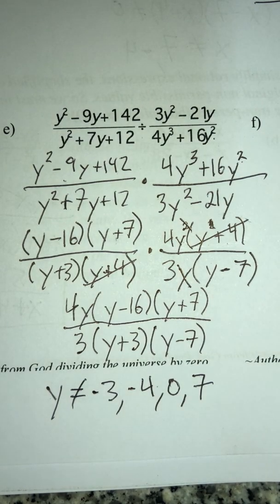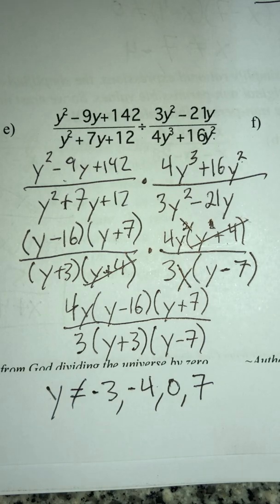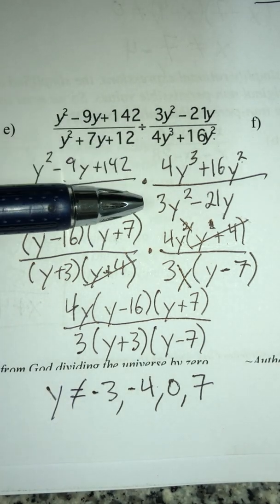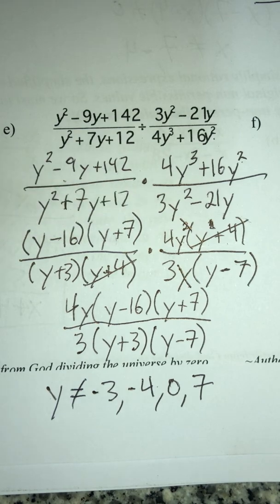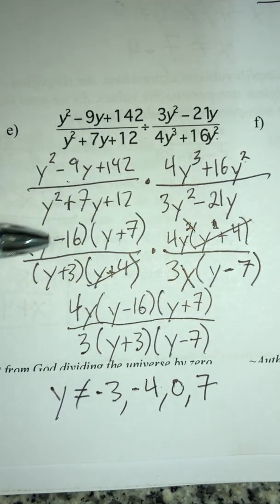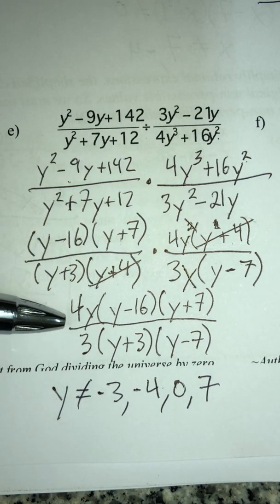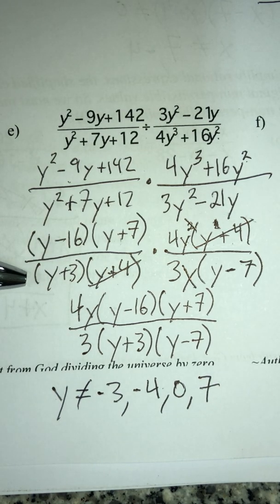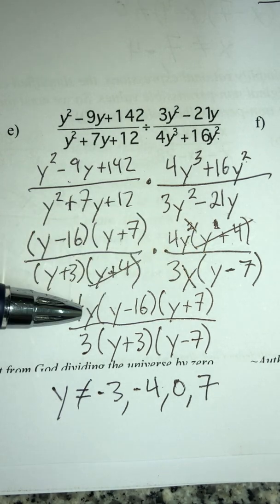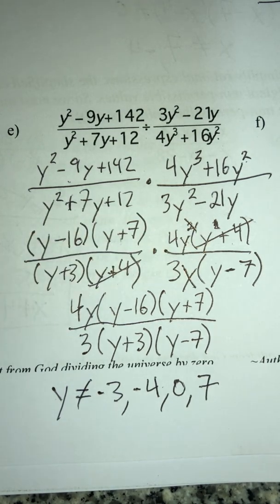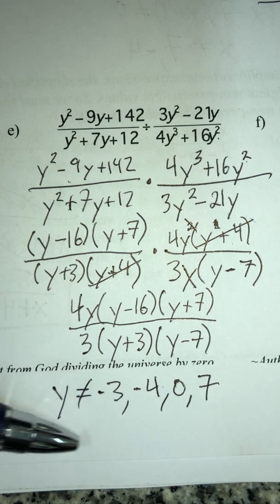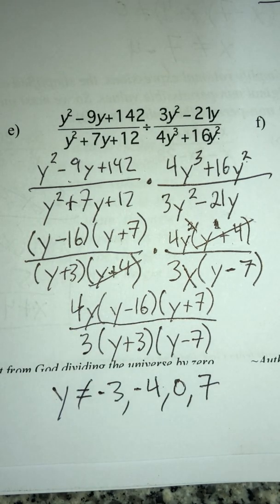That's it for the chapter notes. The process for multiplying and dividing rational expressions is not too bad. If dividing, first flip the second fraction. Then factor everything — review the factoring videos from the first unit if needed. Cancel what's in common, write down what's left, and finally state the restrictions. That's the process for multiplying and dividing rational expressions.